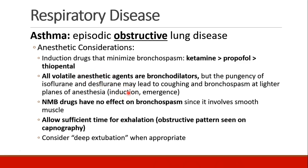All volatile anesthetics are bronchodilators — this needs to be emphasized. The pungency of isoflurane and desflurane can lead patients to cough or have bronchospasm, but that would only be at light planes of anesthesia, like induction or emergence. But if you're using those drugs and the patient goes into bronchospasm, the best thing to do would be to turn them up and get that patient deeply anesthetized to try to break the bronchospasm.